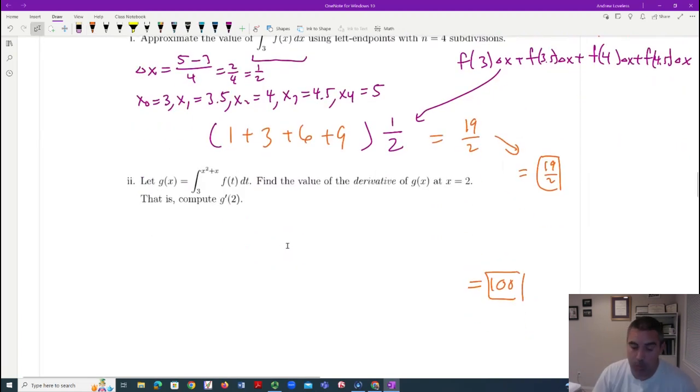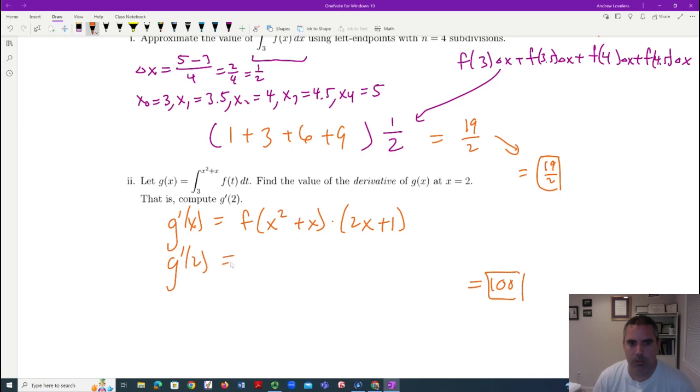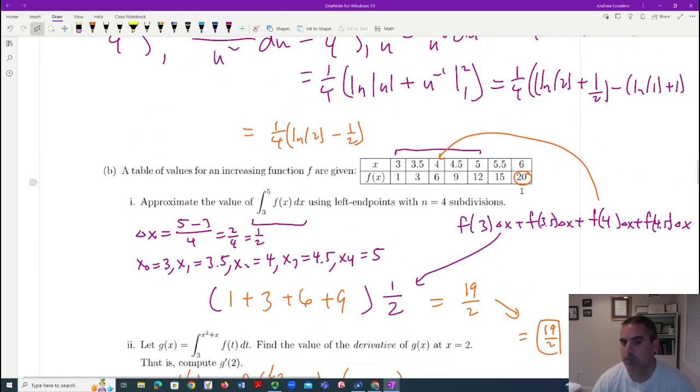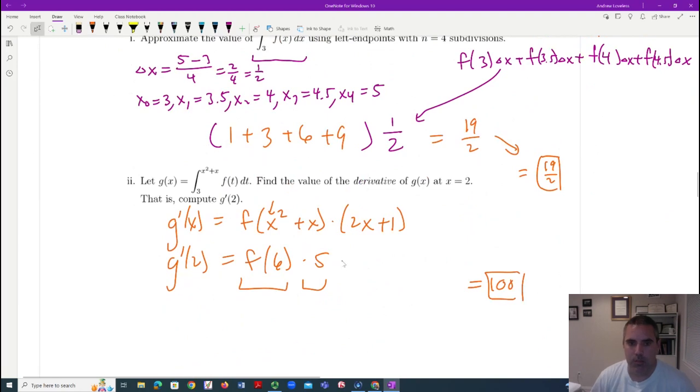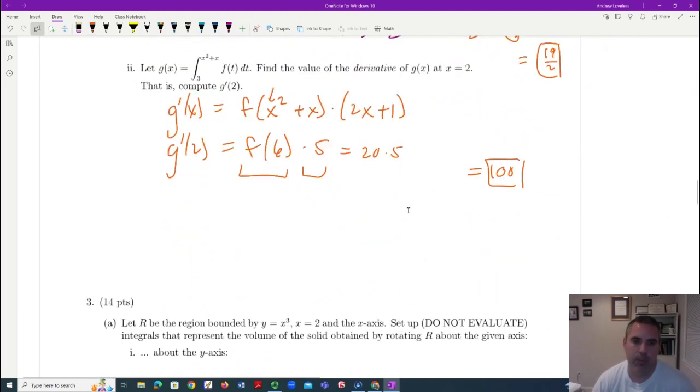Then we get this question. The moment we see this, we talked about this today in class, we should think the Fundamental Theorem of Calculus, part one. Some people might be confused. How am I going to plug in two if I don't know the formula? But if you plug in two here, it's going to be four plus two, which is six. If you plug into here, it's going to be five. So you need to do F of six times five. And you say, well, where do I get F of six? It's sitting right up here. There's a 20. So this is going to be 20 times five. Great.